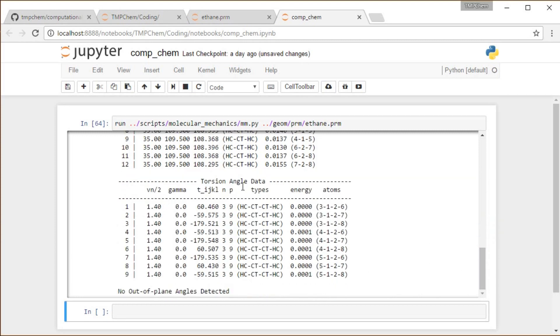And then lastly, we have our torsion angles, which are almost all perfectly staggered, being either 60, negative 60, or about 180 degrees, giving us only a very tiny energy for our torsion angle energy strain.